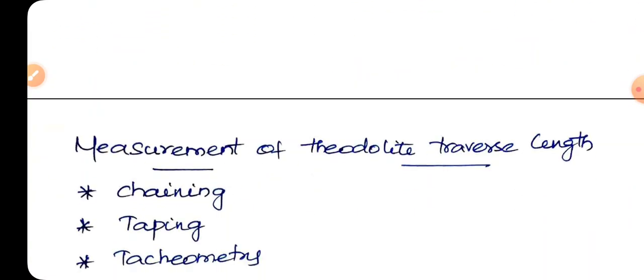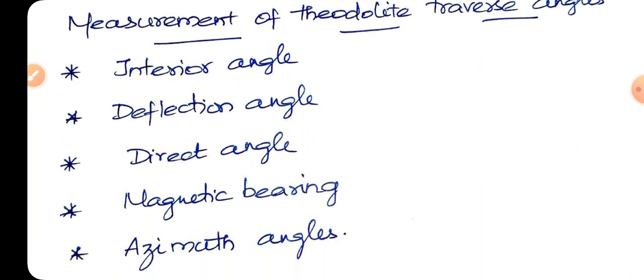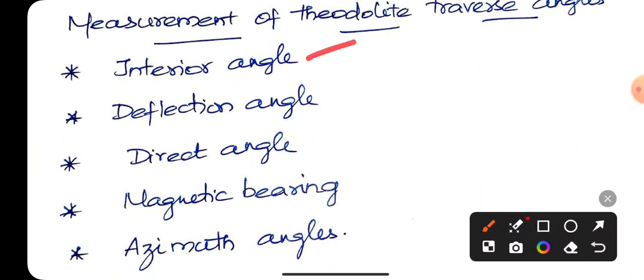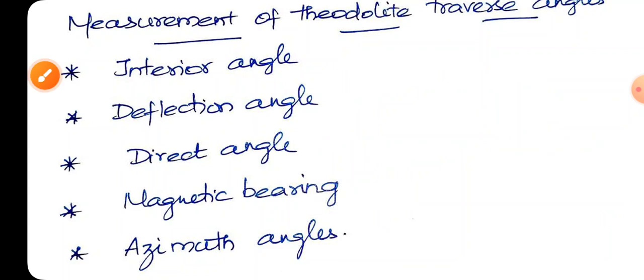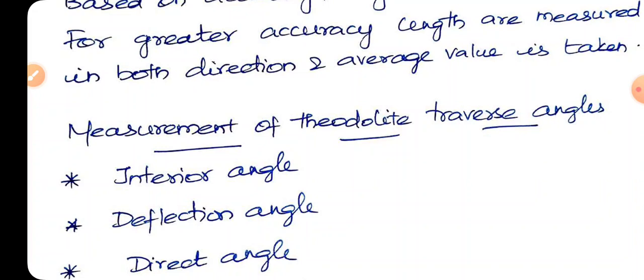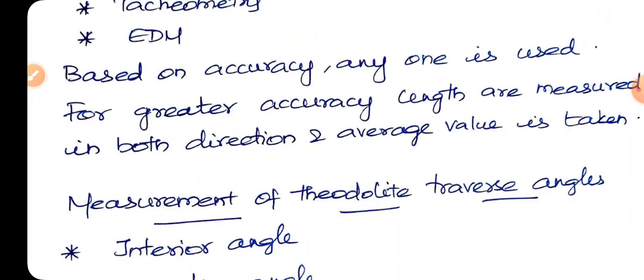Measurement of theodolite Traverse Angle. What is the method? Interior Angle, Deflection Angle, Direct Angle, Magnetic Bearing, Azimuth Angle. Azimuth Angle is straight, true, it is a degree. Magnetic Bearing: Fore Bearing, Back Bearing. Deflection Direction. Measurement of theodolite Traverse Angle.